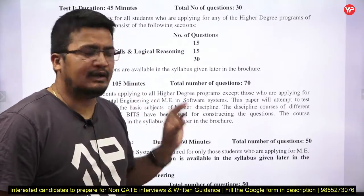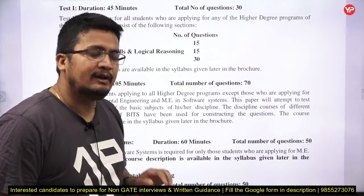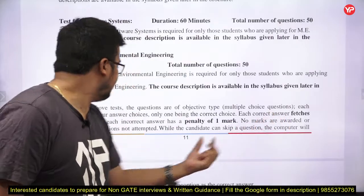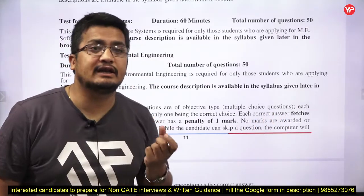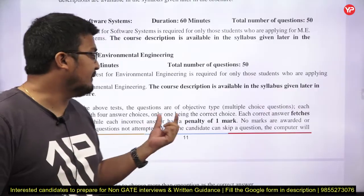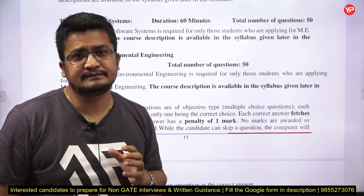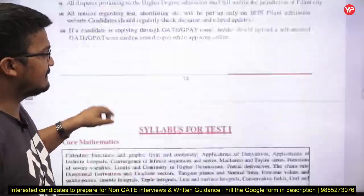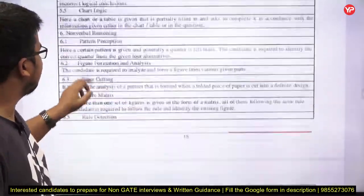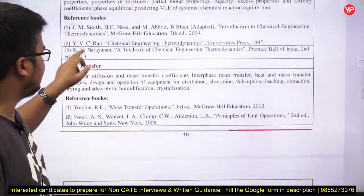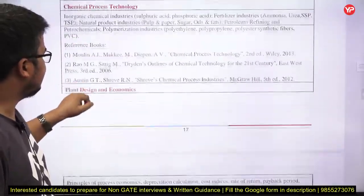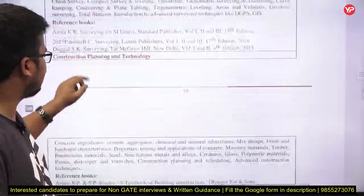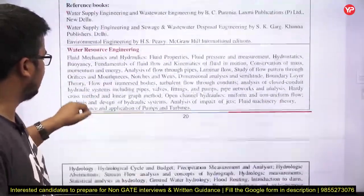Total time and total 100 questions. The key mantra: you will be provided three marks for each correct question and a negative penalty of minus one for wrong answers. Now, if I talk about the syllabus — they have mentioned the syllabus, and I will specifically talk about electronics and communication and electrical students. The same concept and strategies apply for other branches as well.